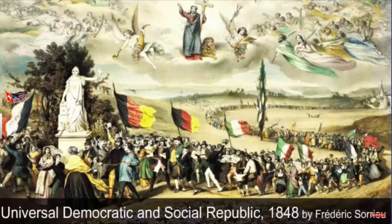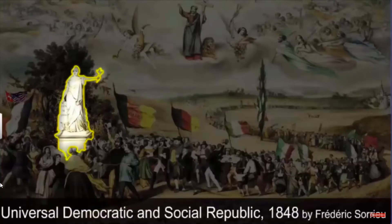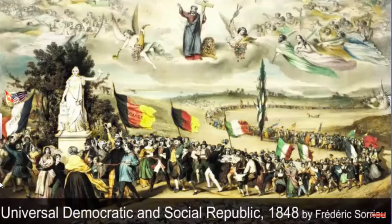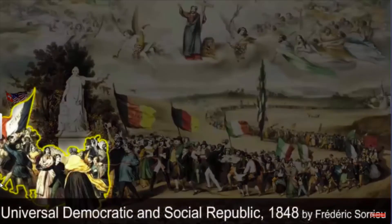If you look carefully, Seurat shows people from different countries and all walks of life marching towards the Statue of Liberty, each of them wearing their national costume and carrying revolutionary flags. The countries leading the procession are the United States and Switzerland. They are followed by the French people carrying the revolutionary tricolor.